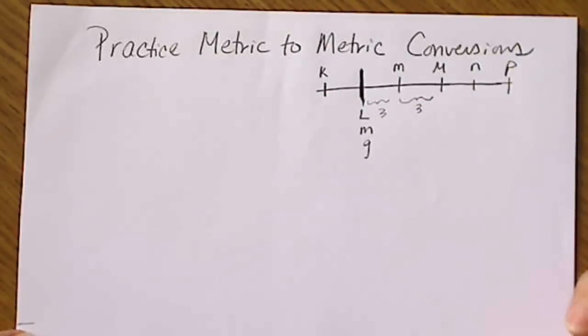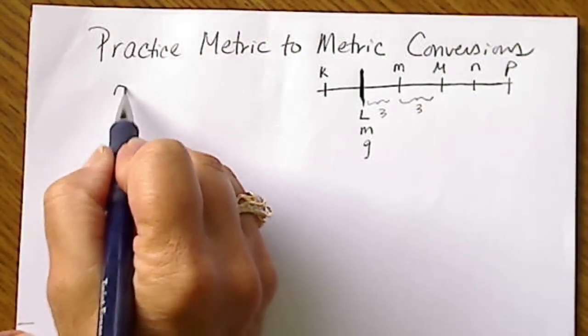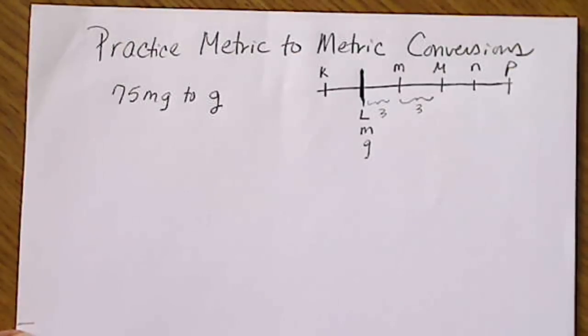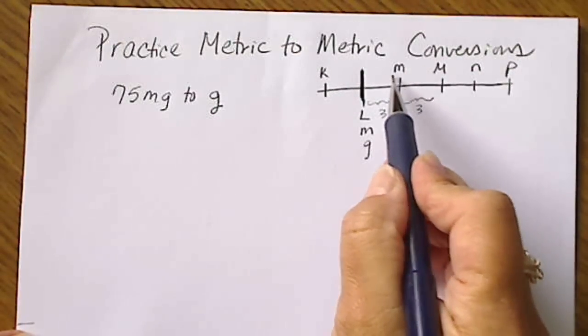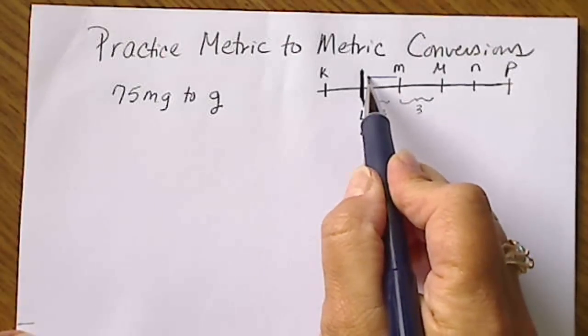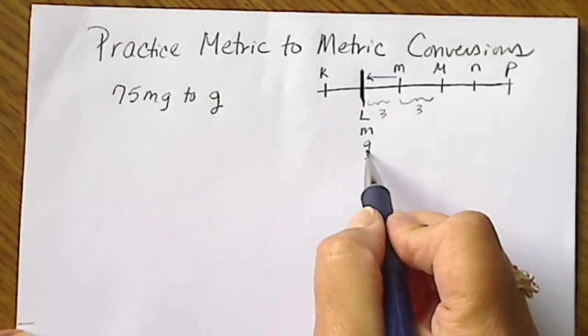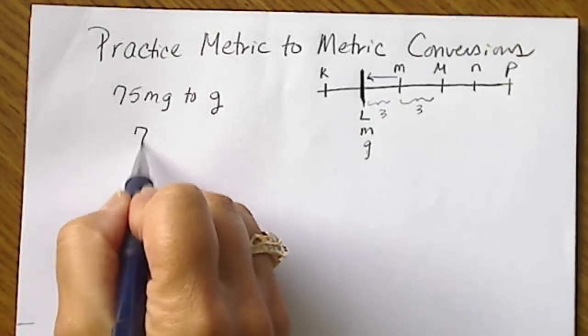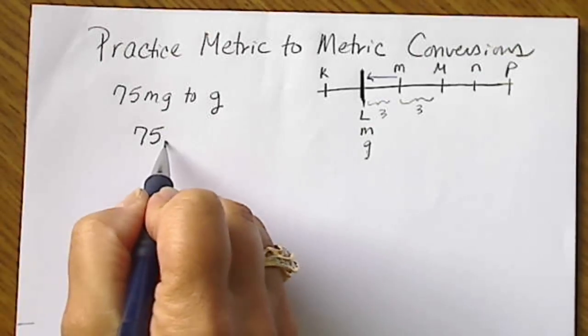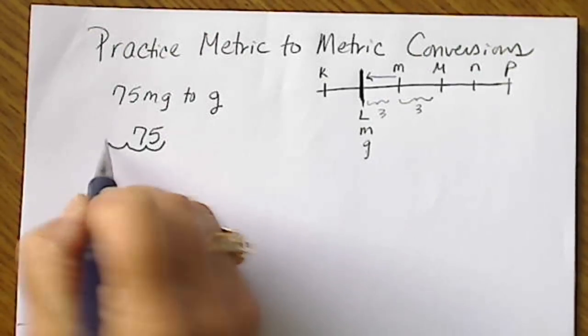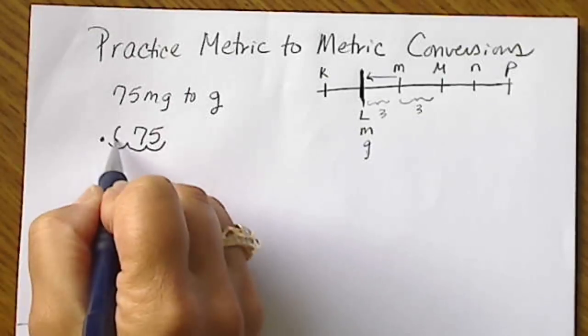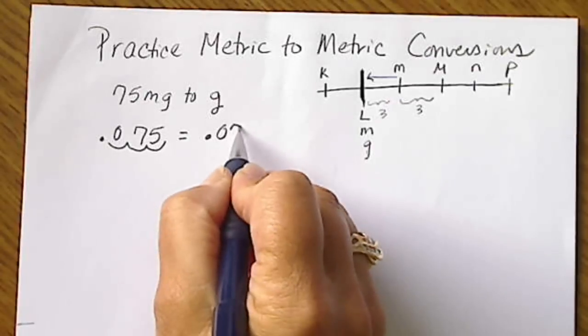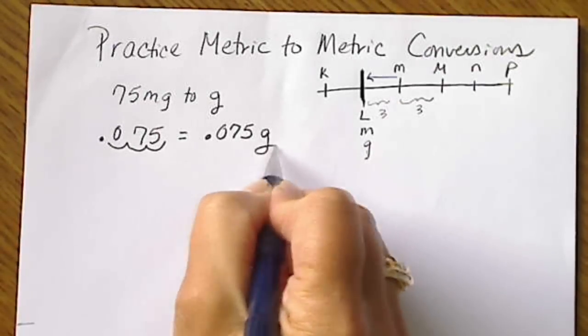So if we convert 75 milligrams to grams, we're just going to start here at milli and move three places to the left because the unit that we're converting to is grams. So again, this would be 75. The decimal is here, three places left. We put a decimal here, fill in a zero, and 75 milligrams is 0.075 grams.